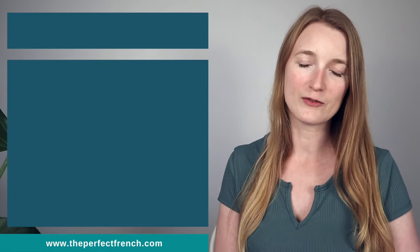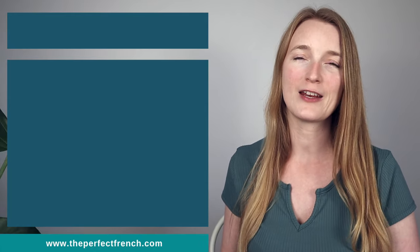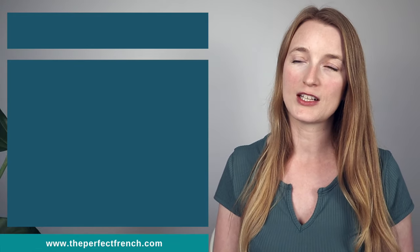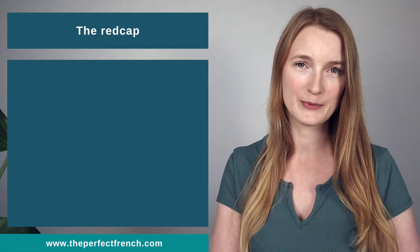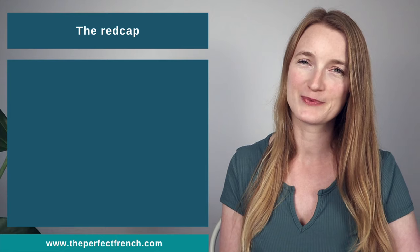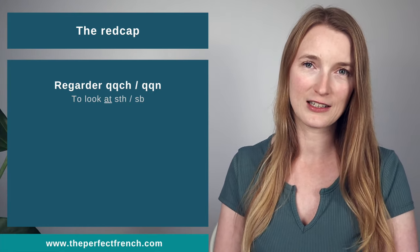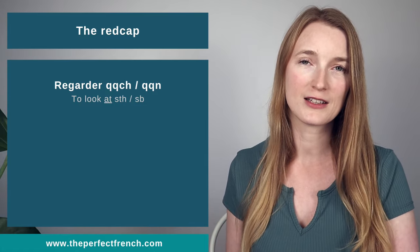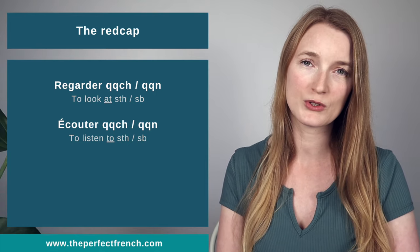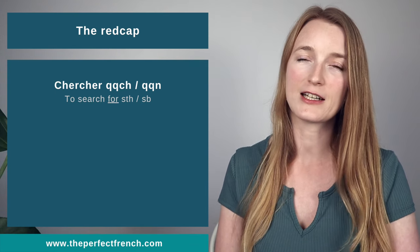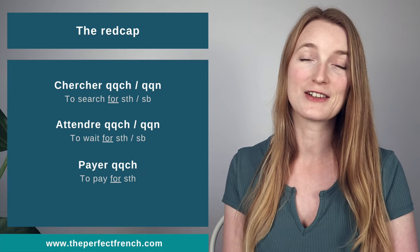A quick side note, because I see a lot of mistakes: some verbs in English take a preposition, but in French they are followed directly by a direct object. We call them the red cap — six verbs to remember. Regarder quelque chose/quelqu'un (to look at), écouter quelqu'un/quelque chose (to listen to), demander quelque chose/quelqu'un (to ask for), chercher quelque chose/quelqu'un (to look for), attendre quelque chose/quelqu'un (to wait for), and payer quelque chose (to pay for). Make sure to remember them.